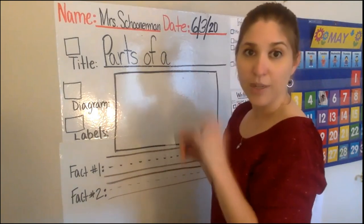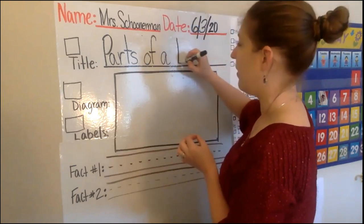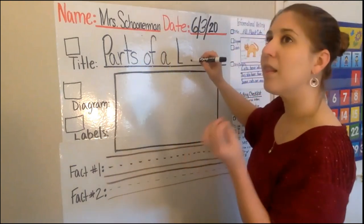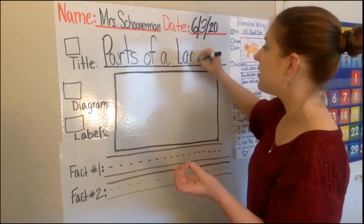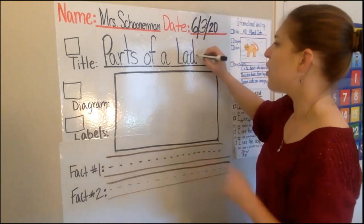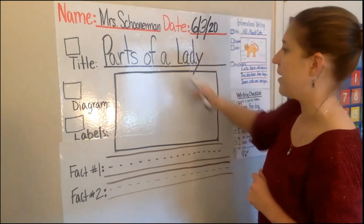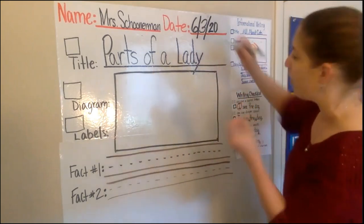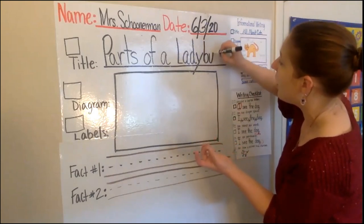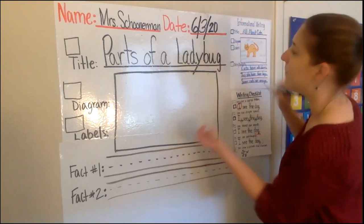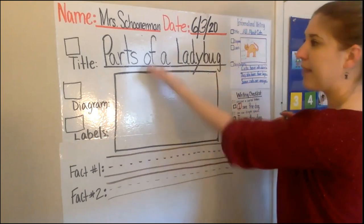The last word is ladybug. L-A-D-Y-B-U-G. Lady, and then this is a tap-out word: bug — B-U-G. Parts of a ladybug — that's our title. We are done with that part.